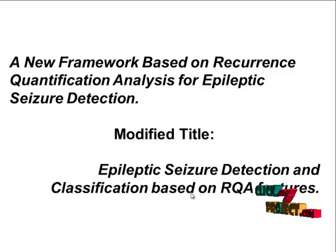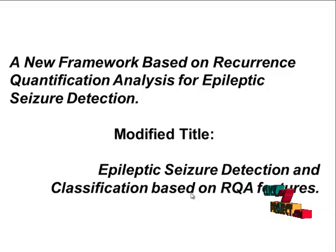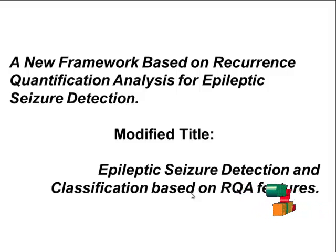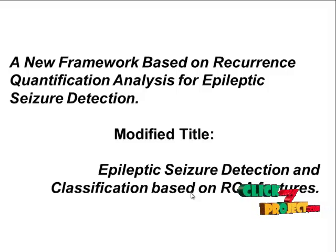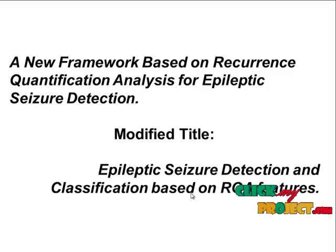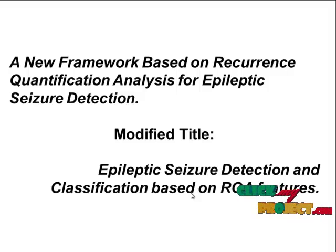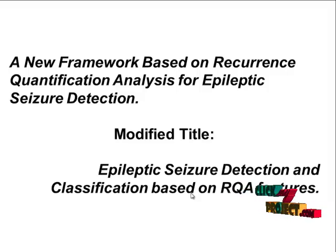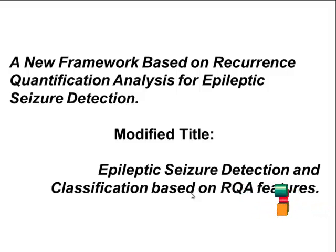Thus, epileptic seizure detection would help these people to have a normal life, since epilepsy is a condition related to the electrical activity of the brain. The EEG signal may help to detect epileptic seizures. However, visual inspection of the EEG data has not yet led to detection of characteristic changes preceding seizures, and detection by visual inspection even by a trained neurologist is challenging due to excessive noise and other reasons.